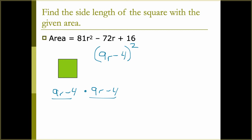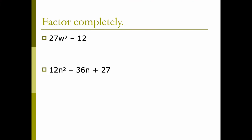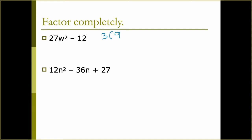Factor completely: 27w² - 12. We look for a GCF — 27 and 12 are both divisible by 3, so we pull out a 3, leaving us with 3(9w² - 4). We now have a difference of squares: 9w² is a perfect square and 4 is a perfect square. Taking square roots and applying the rule gives us: 3(3w + 2)(3w - 2).